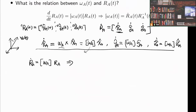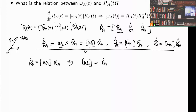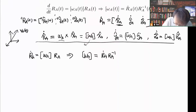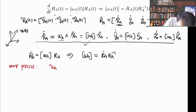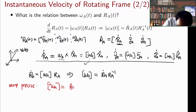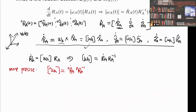So we can find omega_A: if I want to find omega_A, that is R_A_dot times R_A_inverse. To be more precise, omega_A in O (in the inertia frame) equals R_{AO}_dot times R_{AO}_inverse. R_{AO}_inverse is also R_{OA}. That's the first equation we find.